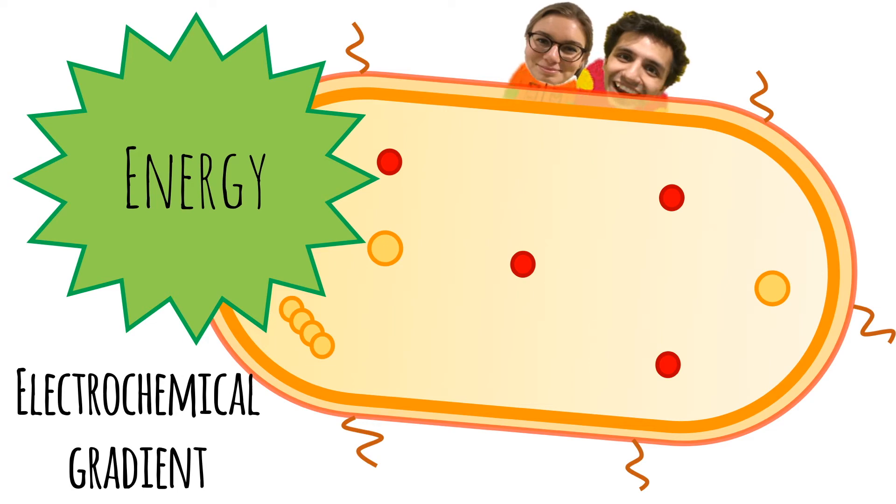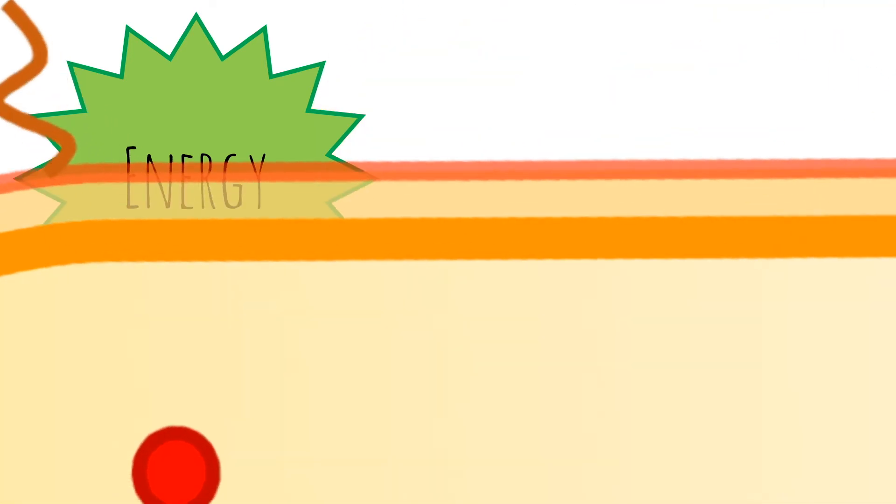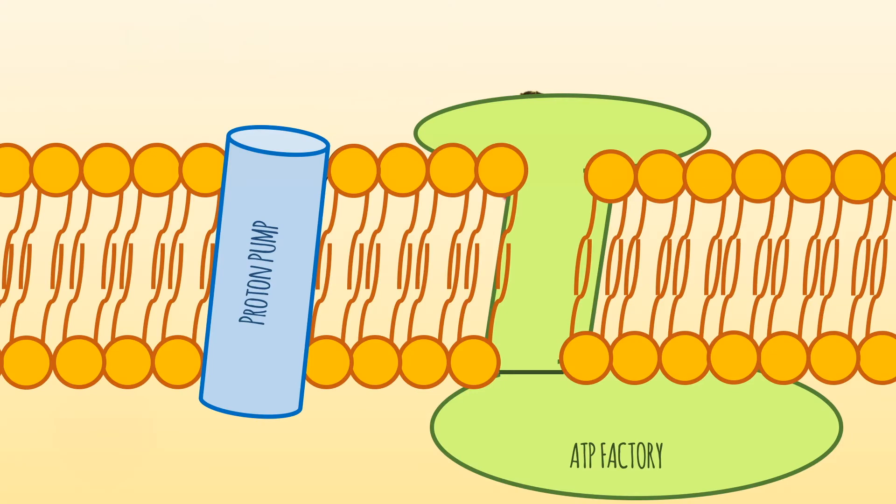The next type of energy transformation involves electrochemical gradients. Now let's zoom in the membrane of this cell. In the expense of energy, protons are pumped out of the cell by this proton pump. A charge gradient is generated.